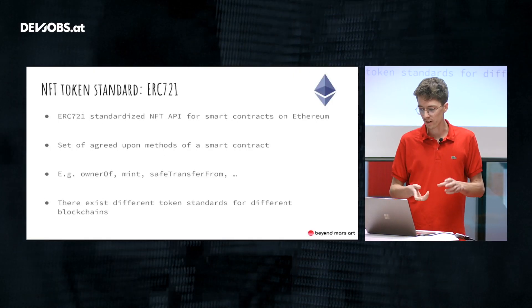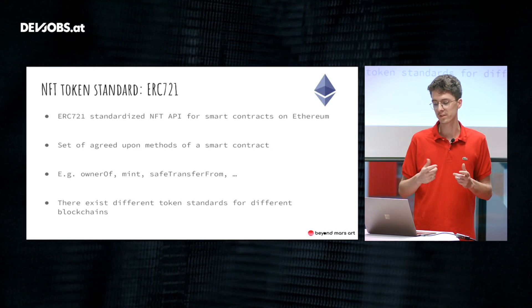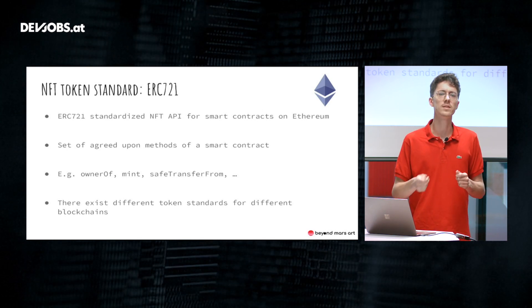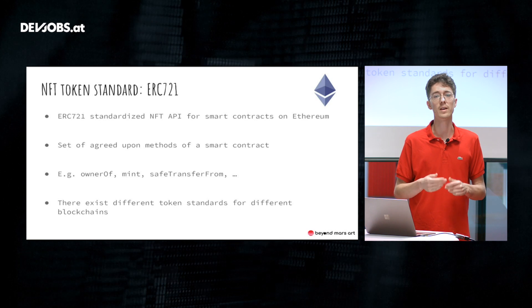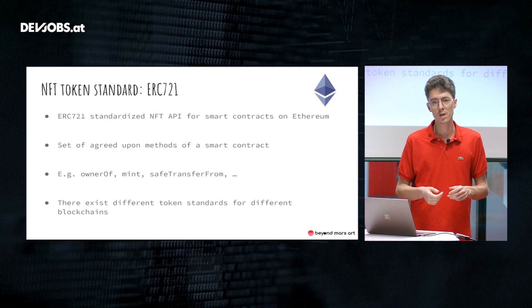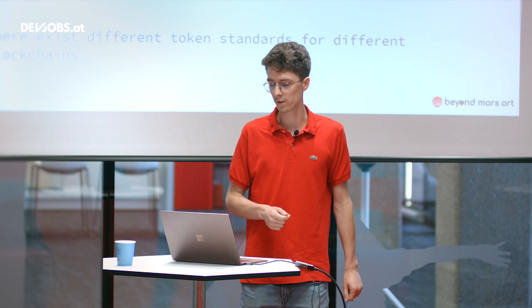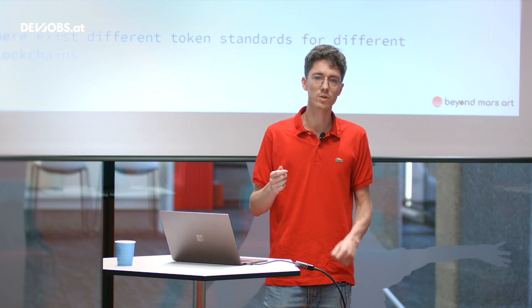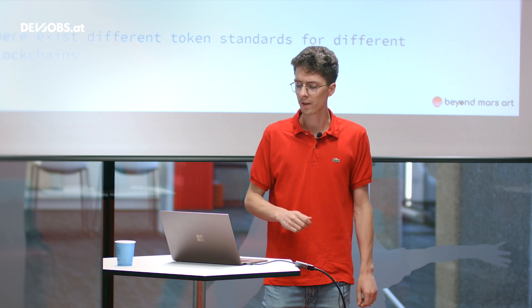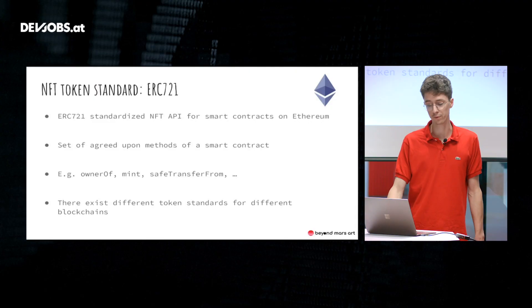Regarding the blockchain, NFTs, and smart contracts — for Ethereum there is a token standard called the ERC-721 token standard. It's a set of agreed-upon methods that a smart contract must have to qualify as an NFT smart contract. Those methods include things like an ownerOf method to get the owner of a specific token, a mint method which creates new tokens, and a transfer method which transfers tokens from owner A to owner B. There are different token standards for different blockchains, and they are often not compatible with each other.